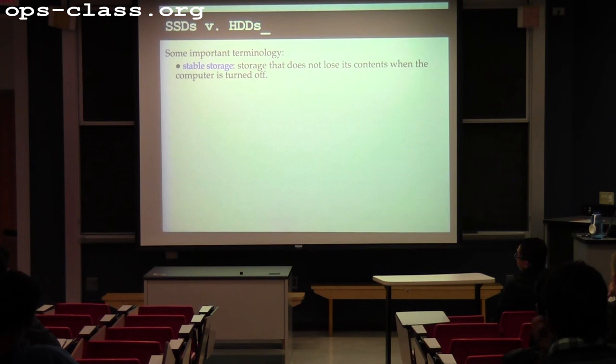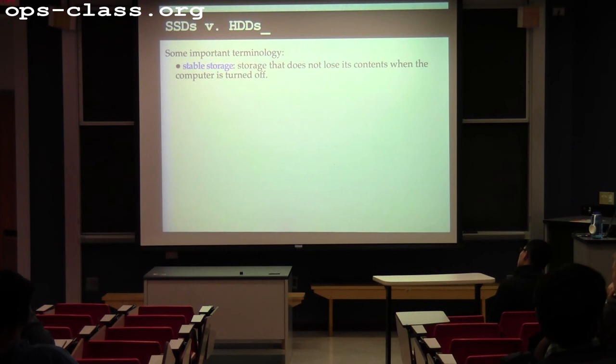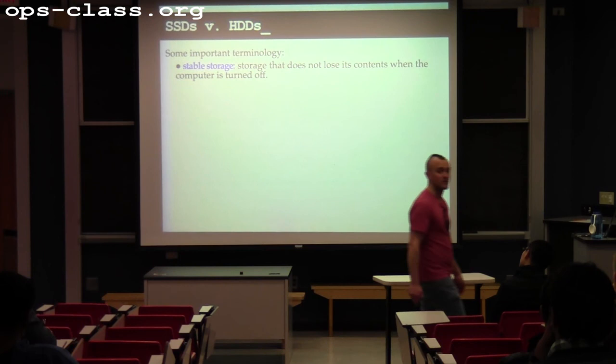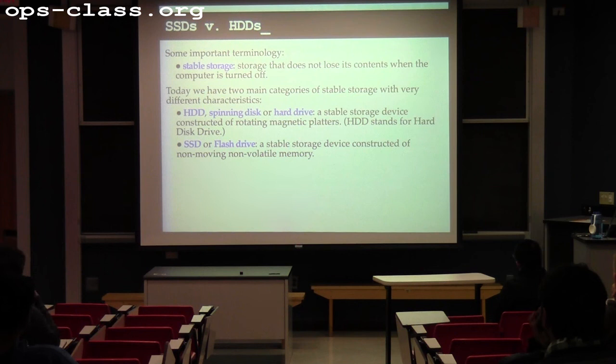So let me start off with some terminology. We're going to start talking about stable storage, and we really refer to two different types. Stable storage, in general, is storage that does not lose its contents when the machine is shut down — distinguished from temporary things like RAM.